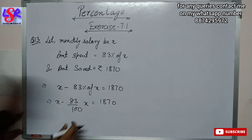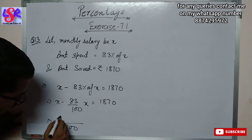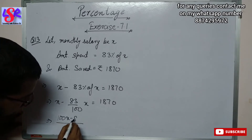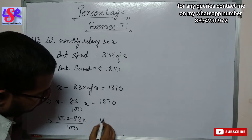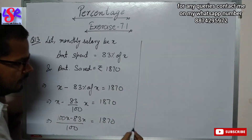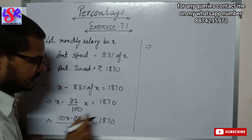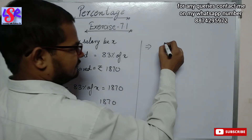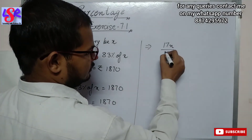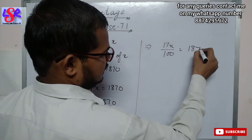Now we are going to take LCM over here, and on taking LCM we will have 100 here. This gives 100x minus 83x equals 1870. On solving, 100 minus 83 gives 17x upon 100 equals 1870.